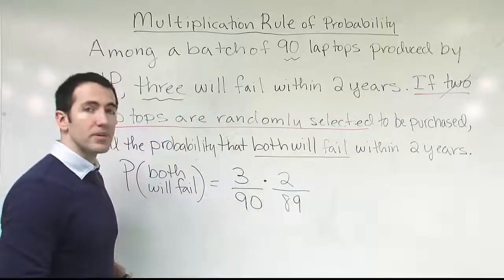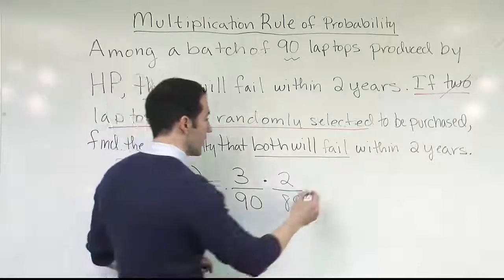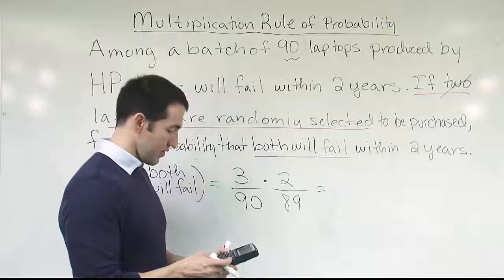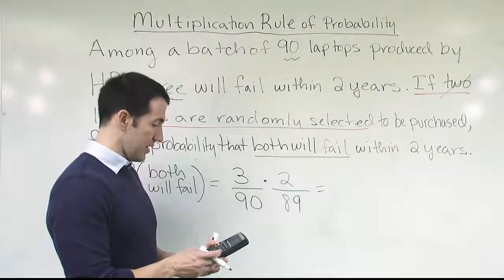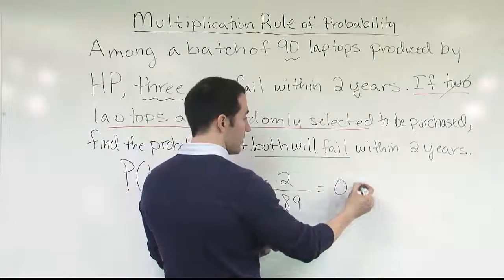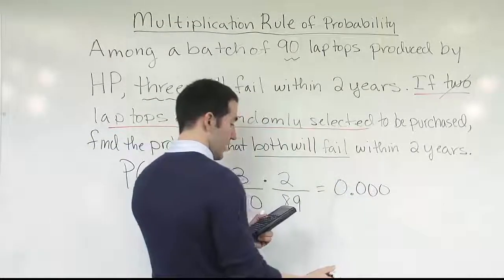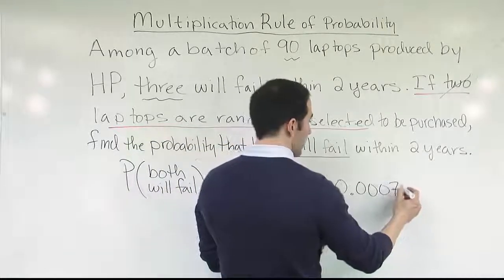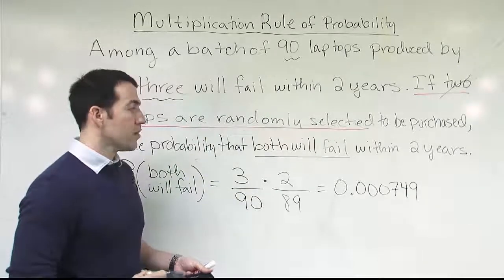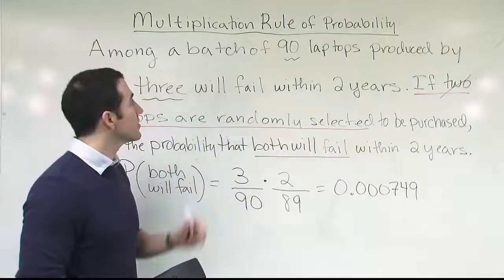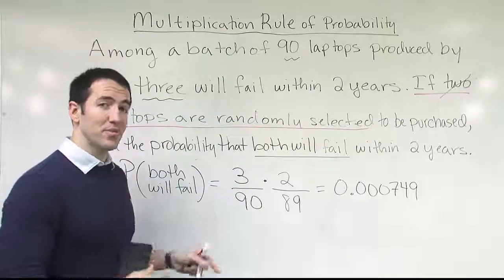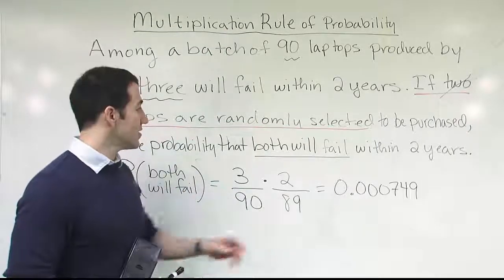This expression — (3/90) × (2/89) — will solve the problem once we multiply it out. We have 6 divided by 90 times 89, and when you're done, you get the probability 0.000749. That's a rather small probability. There are 90 laptops on the shelf and only three are defective, so the chance that you buy two laptops and both are defective is extremely small.